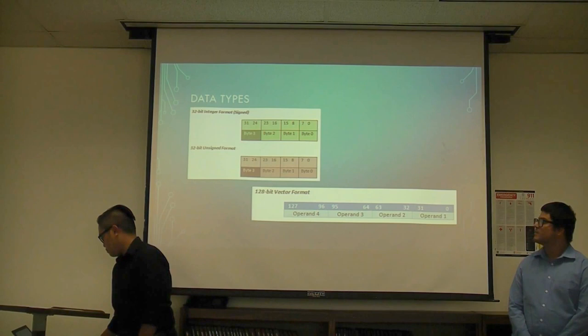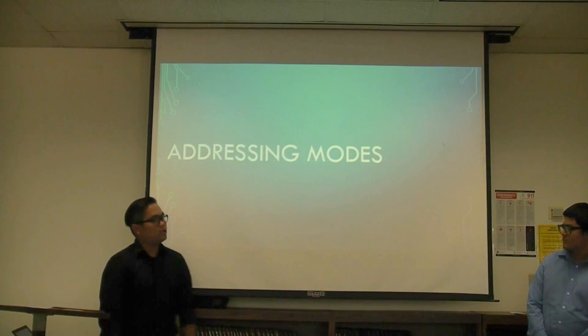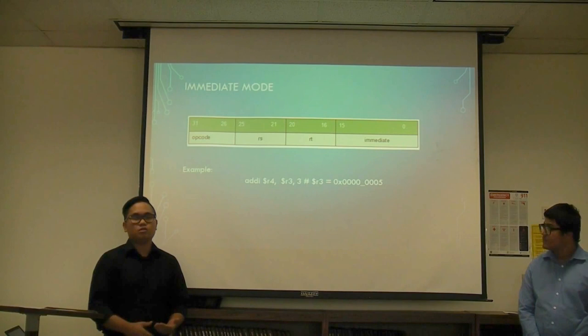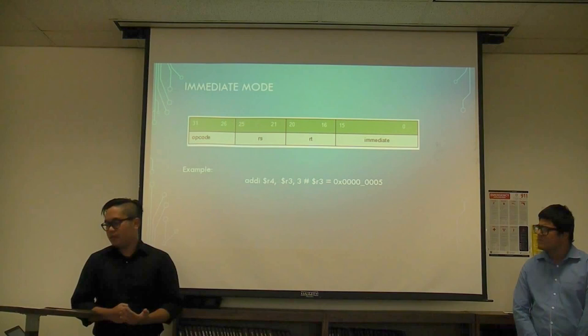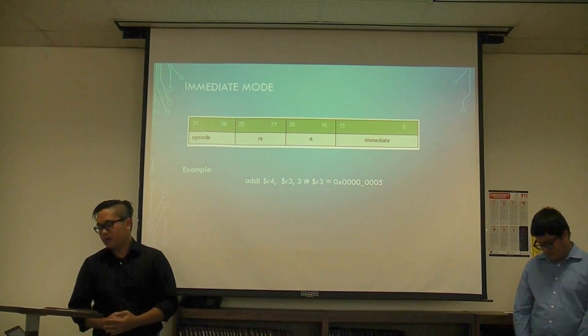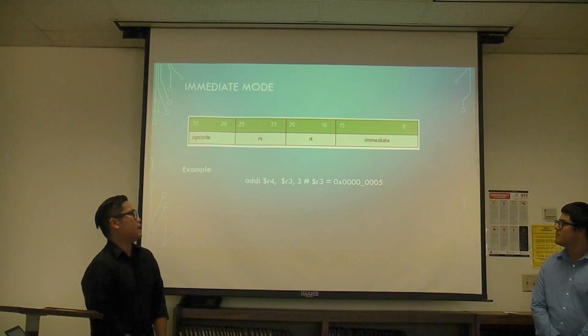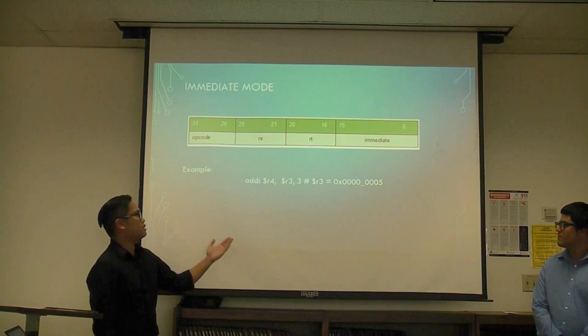Here we are going through the addressing modes. The first one is immediate mode. I-type uses this mode except for store and load word, because those instructions are register and direct. If we use immediate mode, we use the I-type format where 16-bit values are included in the instruction. For this example, 3 would be the offset and R3 would have the value of 0x5. In this operation, we would add them, getting a value of 0x8, and store that to destination register R4.